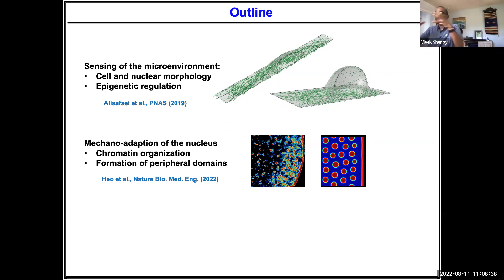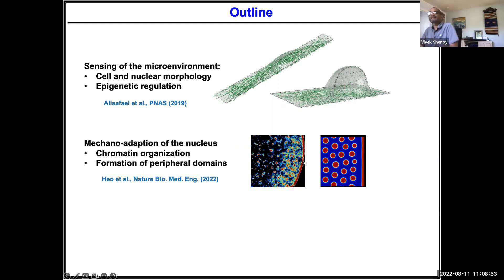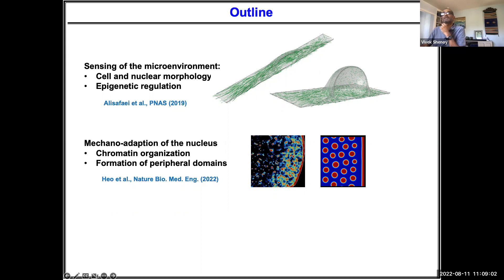Using STORM we can see the density of DNA within the nucleus. The red dots are regions of heterochromatin where chromatin is condensed. Looking at the organization, there are domains in the interior of the nucleus, and DNA is also stacked up against the nuclear lamina — those are called lamina-associated domains. The question we want to ask is: what are the sizes of these domains, how are they distributed, and what is the thickness of the lamina-associated domain as a function of stiffness?